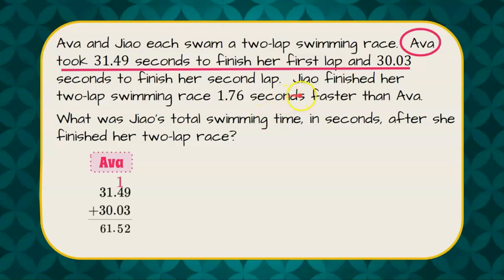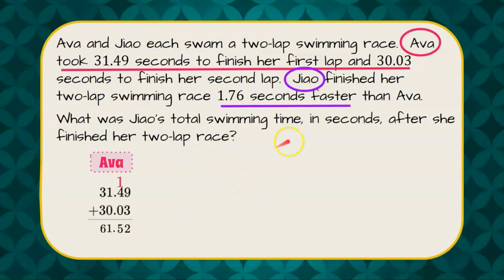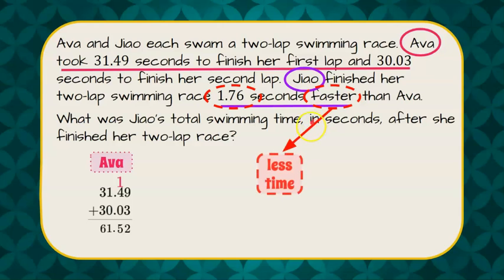Now we go back to Zhao, and she finished her two-lap swimming race 1.76 seconds faster than Ava's 61.52 seconds for both laps. We need to understand that 'faster' translates to less time. If she did it faster, she did not take as long, so that means we need to subtract.